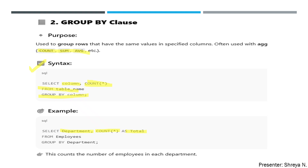This query counts the number of employees in each department and forms a 'total' column where every department's total count appears. I hope you understood this point.